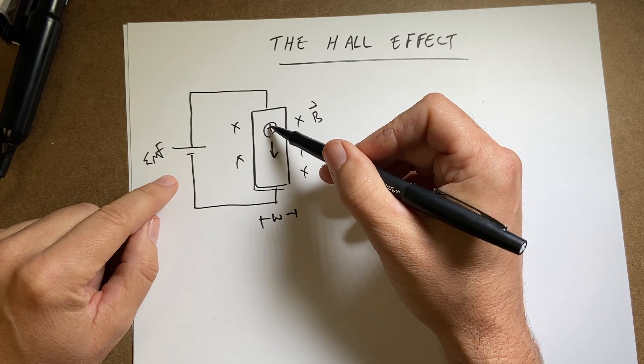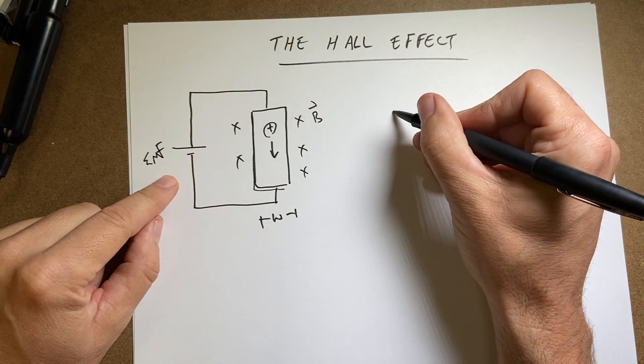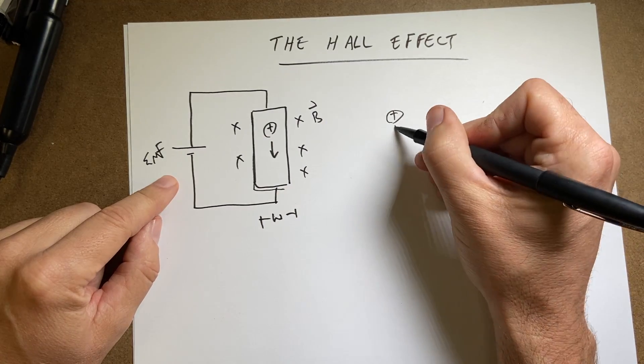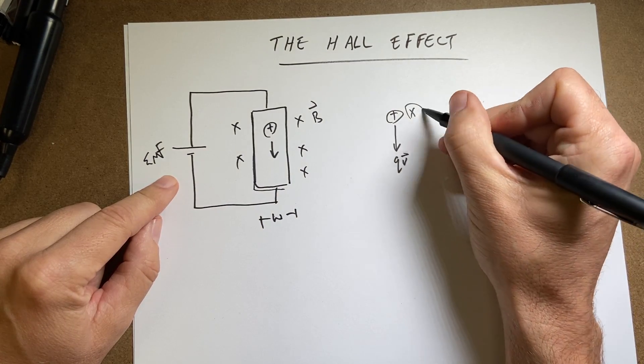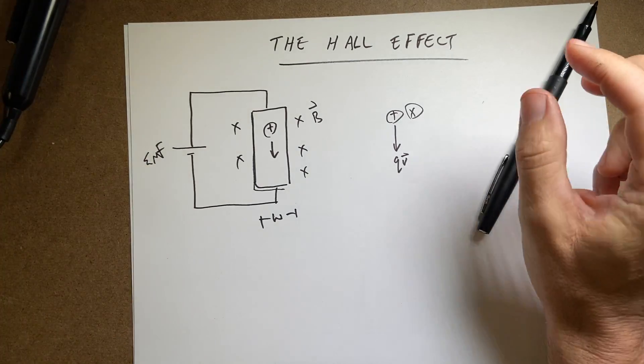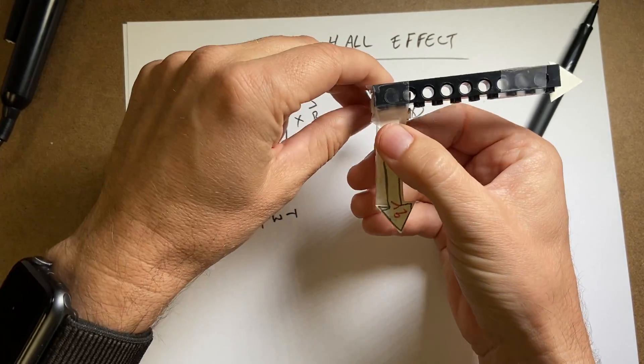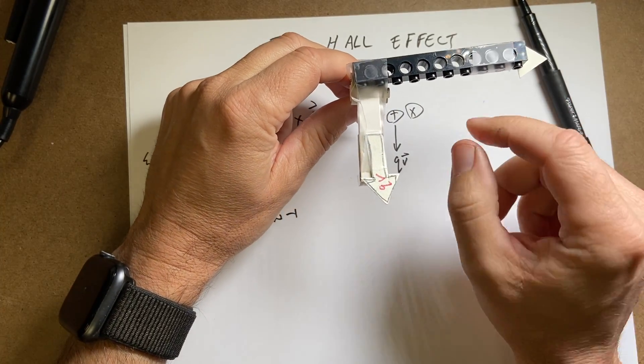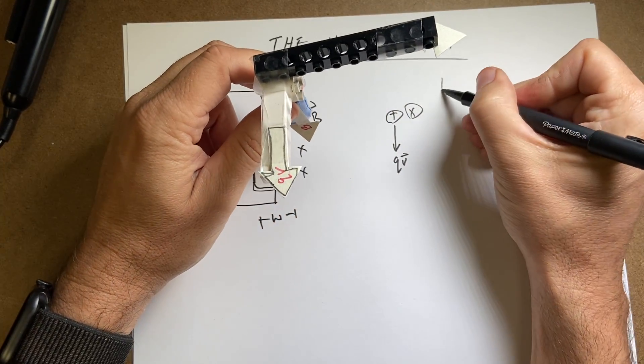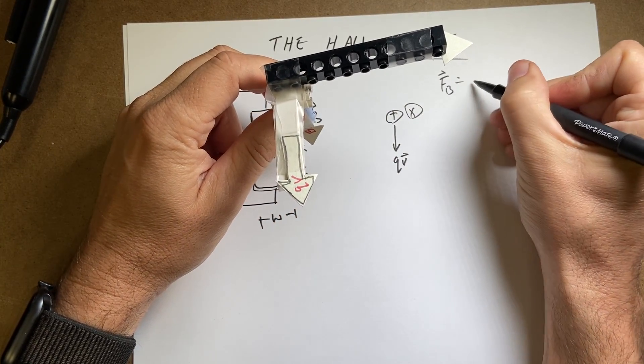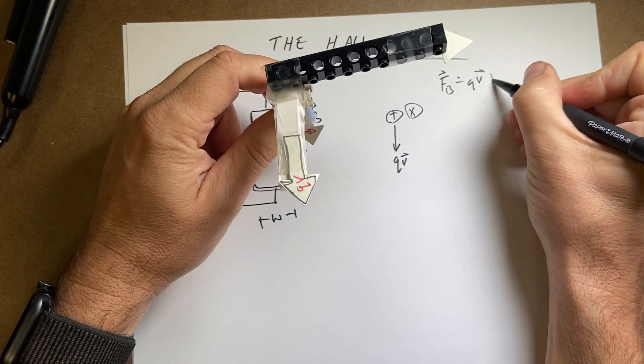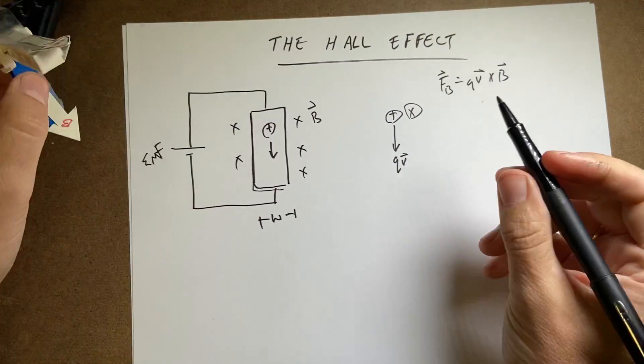Well, what's going to happen to that charge? If I draw just that charge, I have QV this way. I have B going into the board. So then I can pull out my little thingy here. QV like that. B is that way. So there's a magnetic force on there. FB equals QV cross B. And the direction that's going to be to the right.